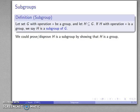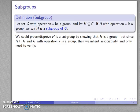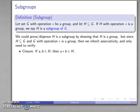We could prove or disprove that H is a subgroup by showing that H is a group. However, as mathematicians we like to be as efficient as possible in our analysis. Since H is a subset of G and G is a group, we inherit associativity, and the only things we have to verify are going to be closure.